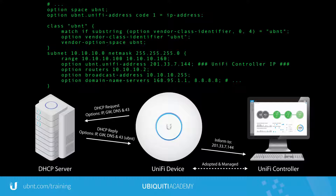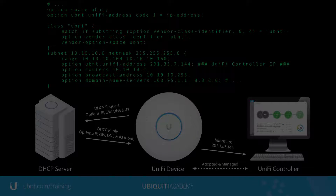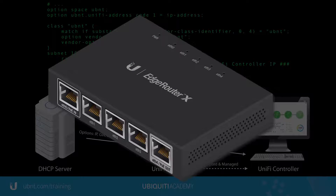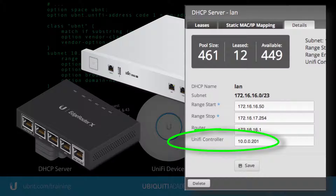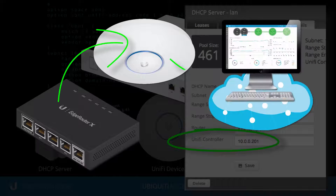In addition to offering an IP address, gateway, and DNS settings, a DHCP server can also share the IP address of the Unify controller to Unify devices via DHCP Option 43 configuration, whereupon the DHCP server listens for the Vendor Class Identifier in the client DHCP lease request. Conveniently, Ubiquiti DHCP server devices such as EdgeRouter and Unify Security Gateways can be configured with Option 43 to include the Layer 3 IP of the Unify controller in the DHCP lease.